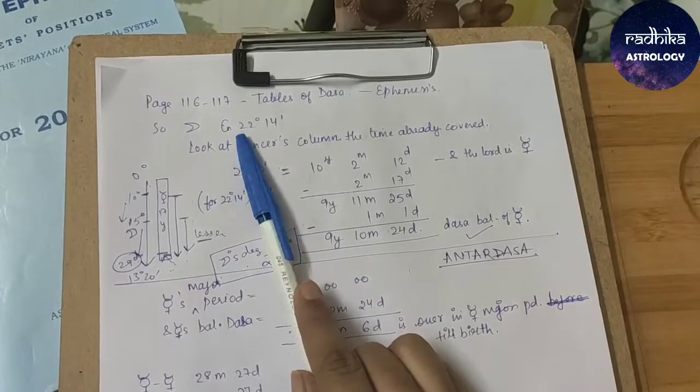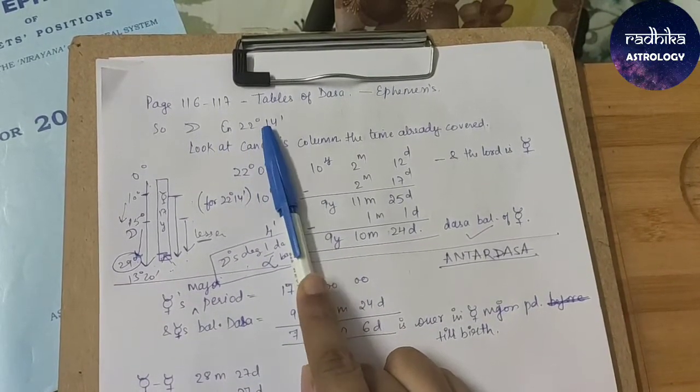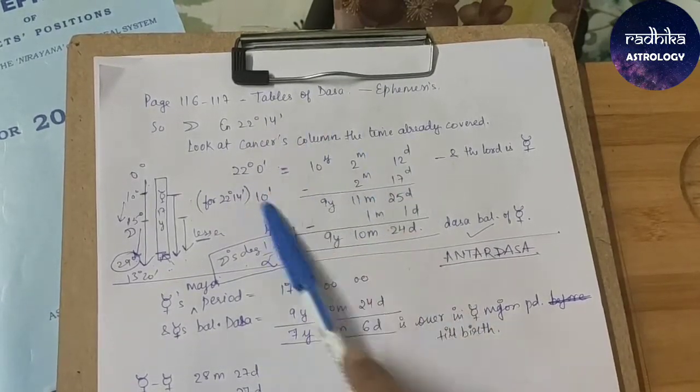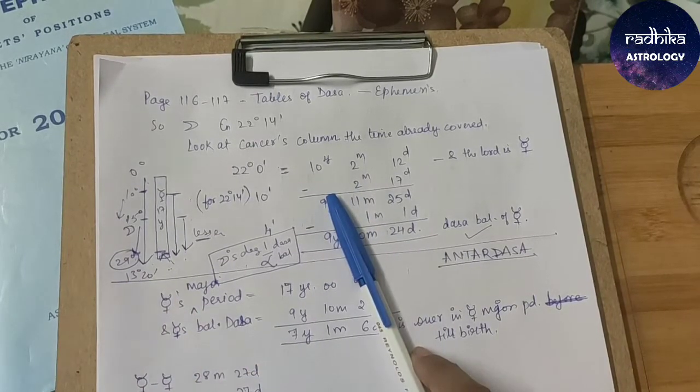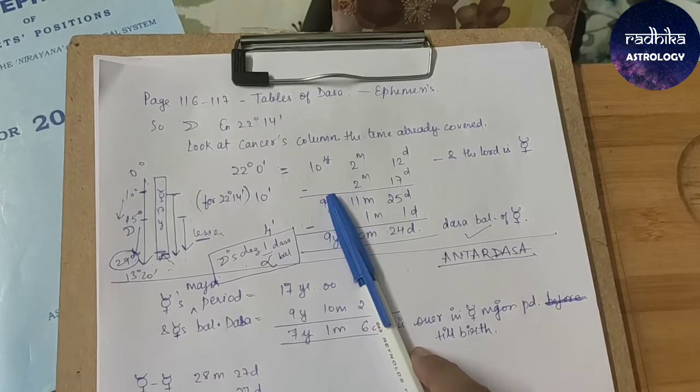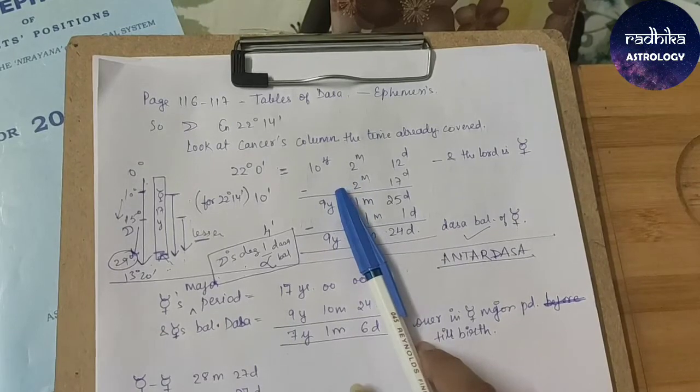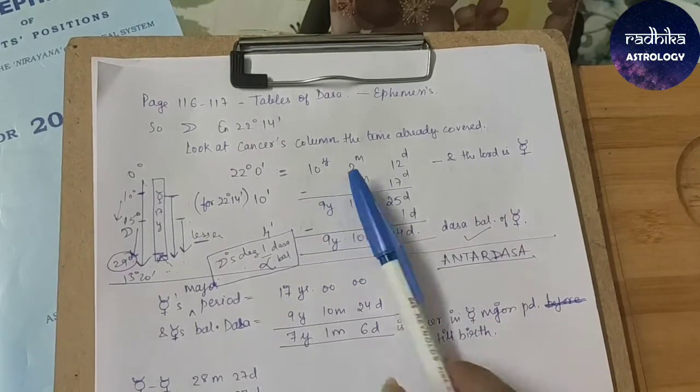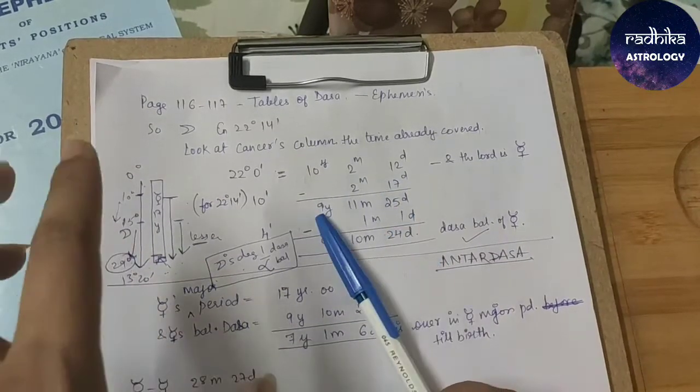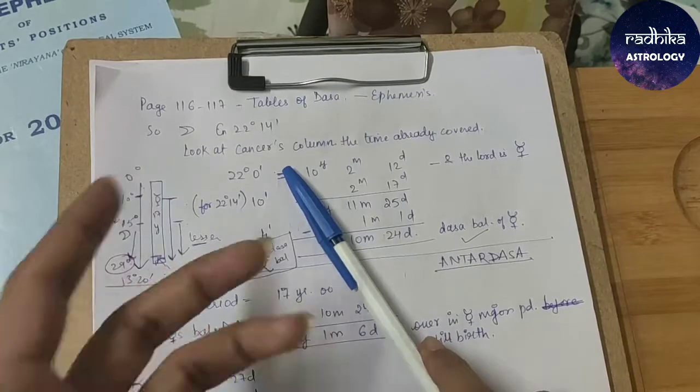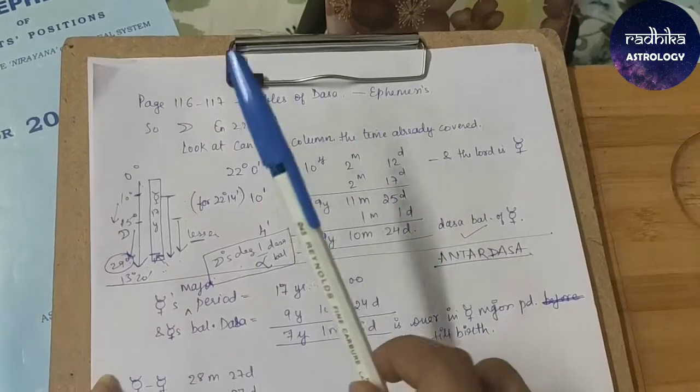In that example we had Moon in Cancer sign 22 degree 14 minutes and using the second method, this is the second method illustration. The first method I already told you, we can directly subtract the value of moon degrees from 13 degree 20 minutes, whatever balance is left converting into minutes. Then in 800 minutes, whatever is the portion covered by Mahadasha Lord is, for example in this case Mercury is 17 years.